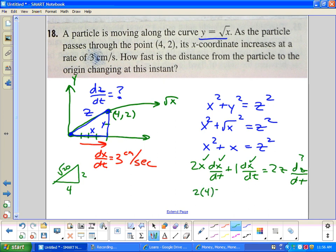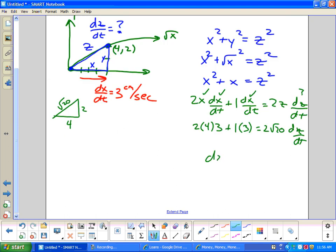So 2 times 4 times 3 plus 1 times 3 equals 2 times the square root of 20 dz/dt. And if we solve for dz/dt, which the units are going to be centimeters per second, I'll flip it around. dz/dt equals 3.0187 to four decimal places. And that is how fast the rate of change from the distance from the origin.